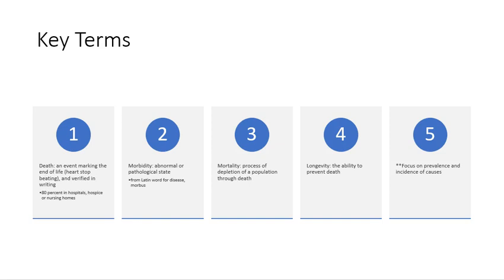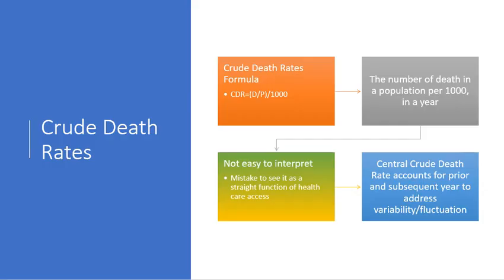There's also the need to focus on the prevalence and incidence of causes of death, which are of course related to morbidity. The first measure we'll review is the crude death rate, which has to do with the overall population and the number of deaths that occur per 1,000 people. There's also a variation called the central crude death rate that takes into account prior and subsequent years in order to address variability and fluctuation, smoothing out movement in the crude death rate across cohorts.